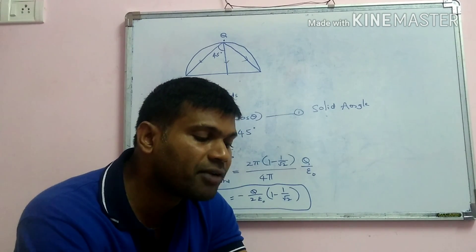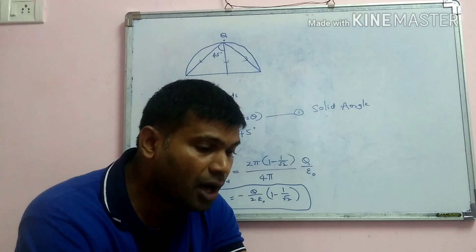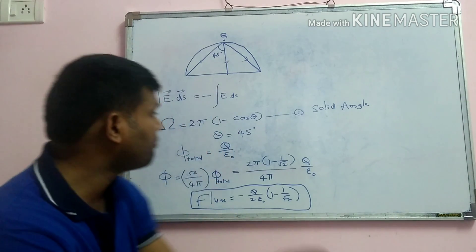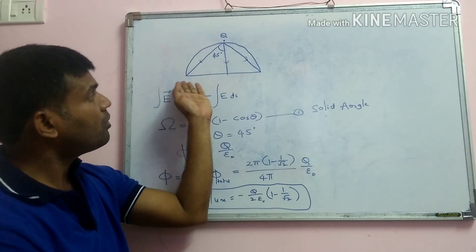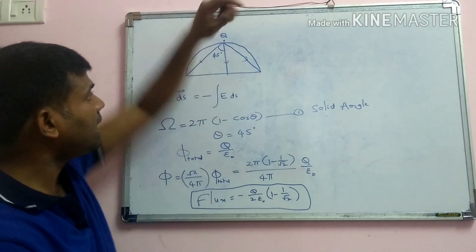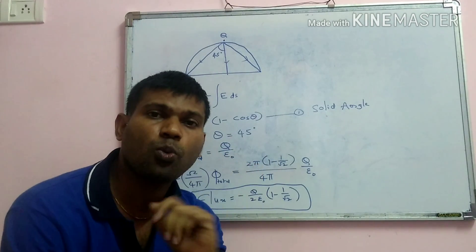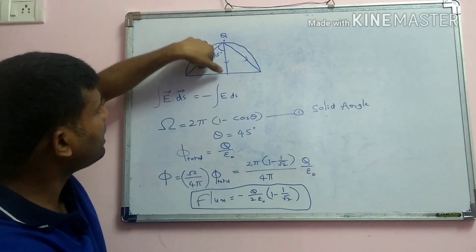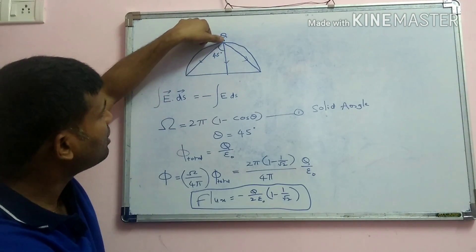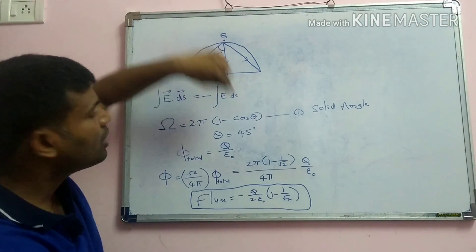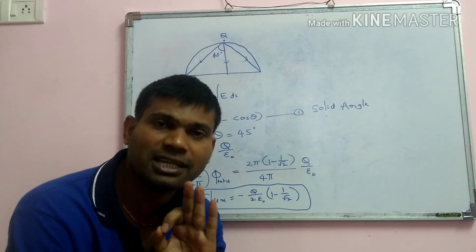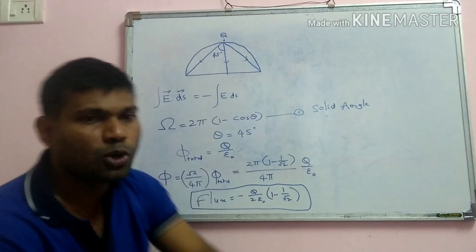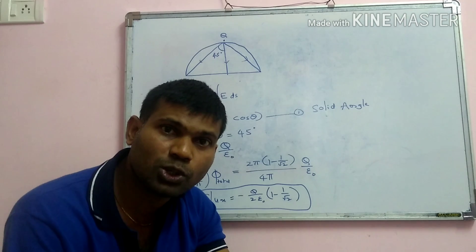Option C: the component of electric field normal to the flat surface is constant over the surface. The electric field E = (1/4πε₀) Q/r². The distance r from the charge to different points on the flat surface is changing, so the electric field is not constant. Option C is also wrong.